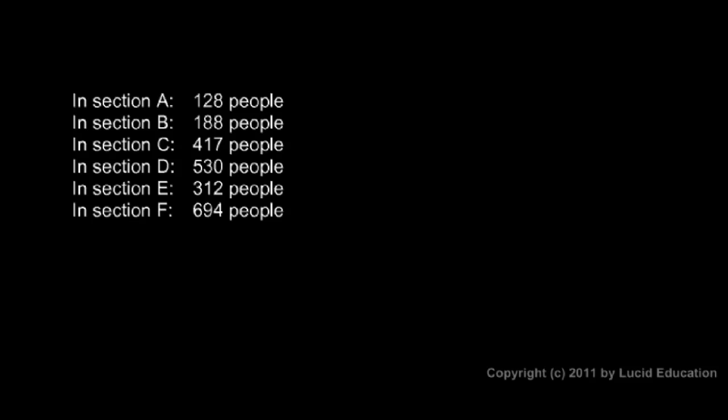So what we can do in this case is round each of these numbers to the nearest hundred, and then it will be a lot easier to add them up. So in section A, instead of saying 128 people, I'll call that 100, approximately 100. And in section B, instead of 188, that's approximately 200 people.